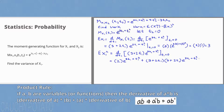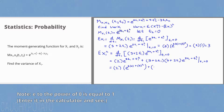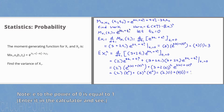Remember, taking the derivative of e to a power is just the derivative of the exponent multiplied with e to that power. Plugging in t1 equals 0: 2 times e to the 0 plus (3 plus 0) squared times e to the 0, which equals 2 times 1 plus 9 times 1 equals 11. So the expected value of x1 squared is 11.